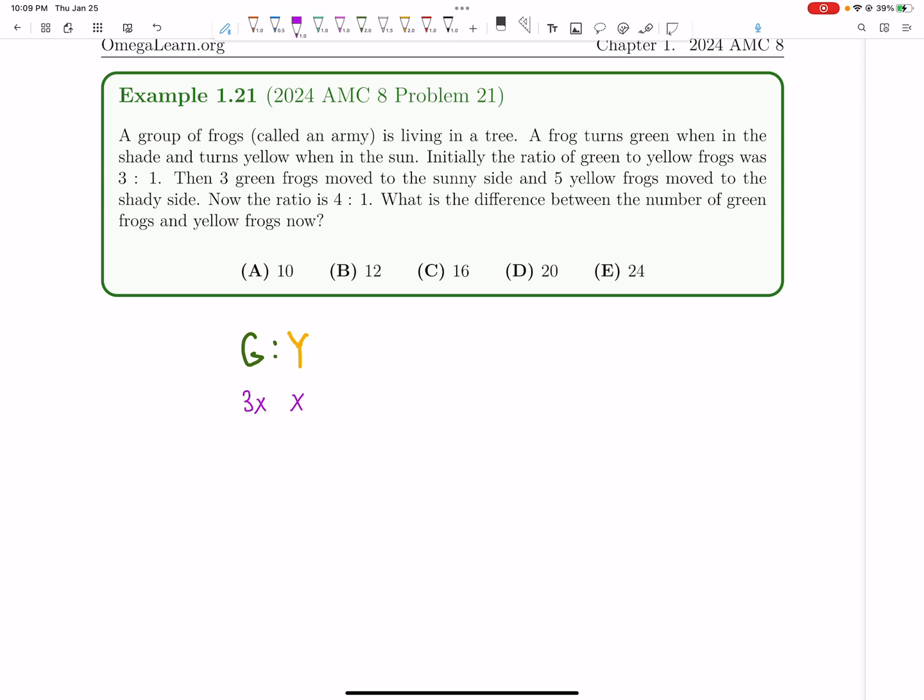Three green frogs move to the sunny side and turn yellow. Three frogs that are initially green become yellow. So that becomes 3x minus 3 green, and then x plus 3 yellow.